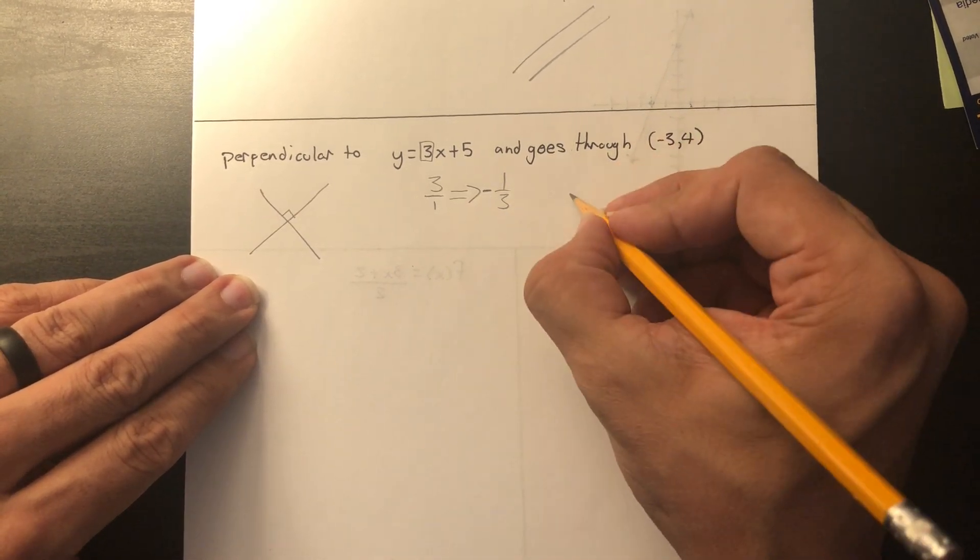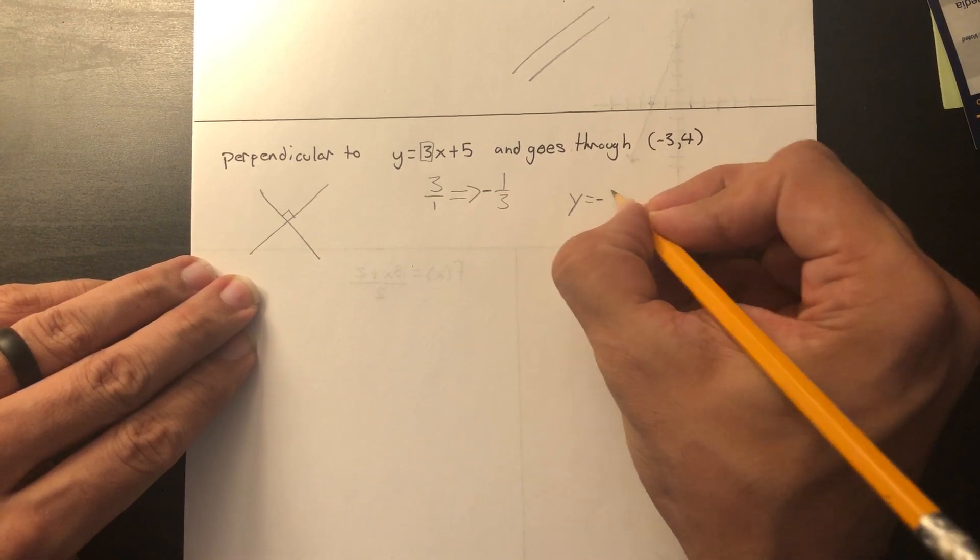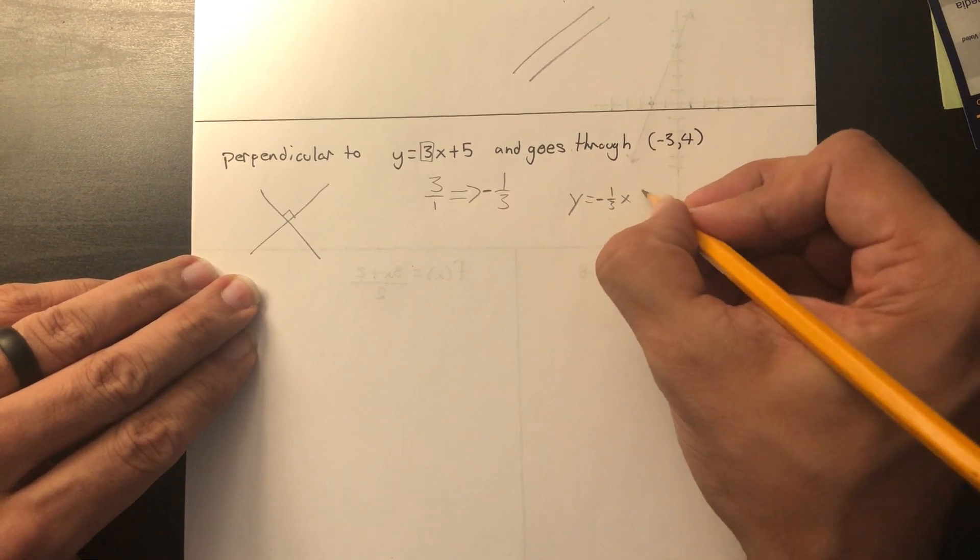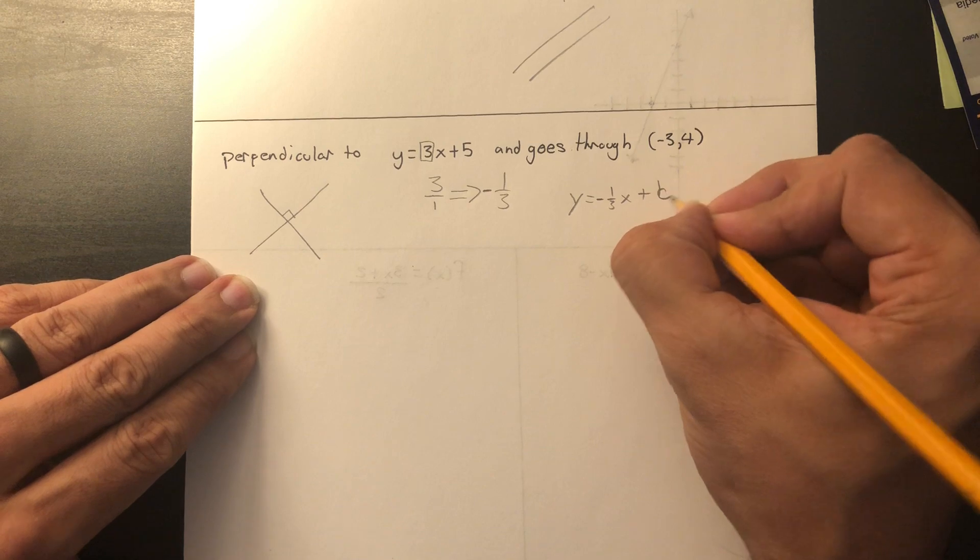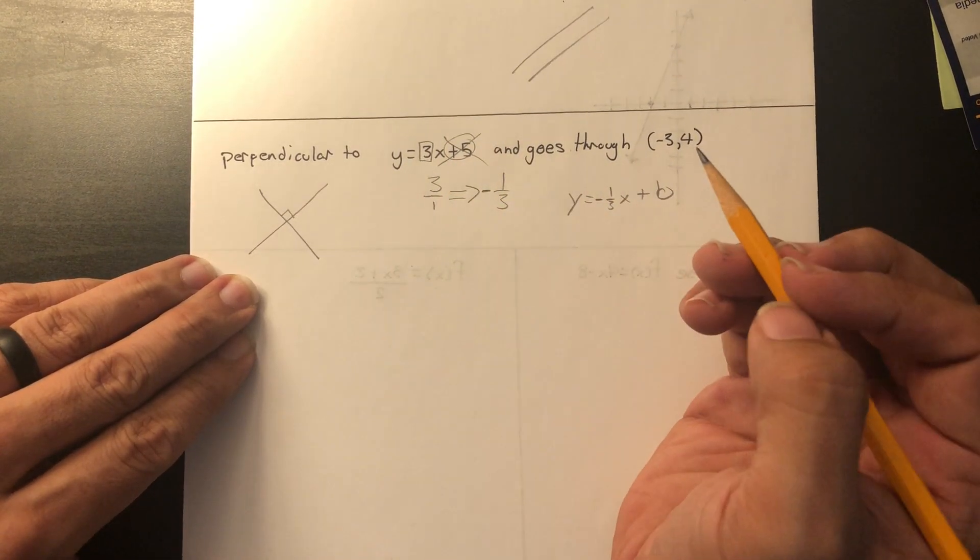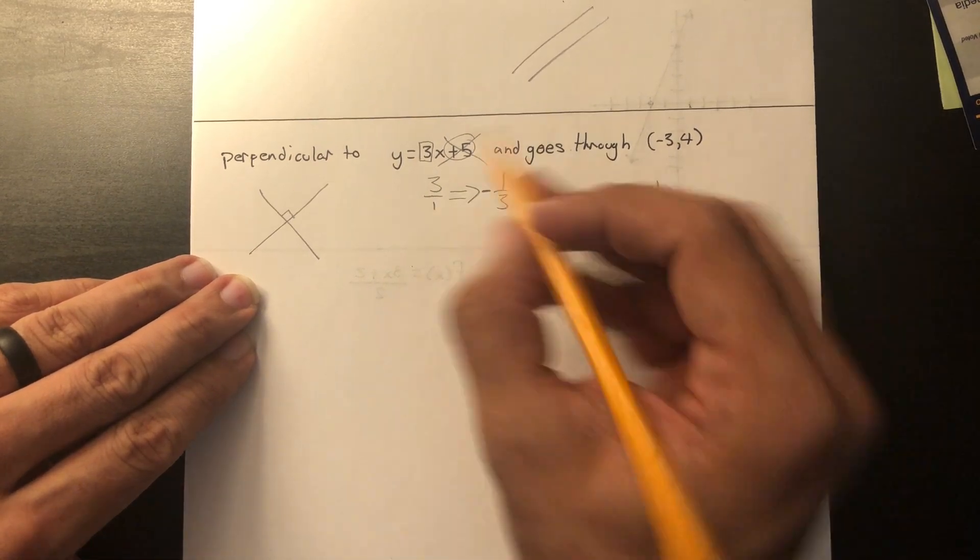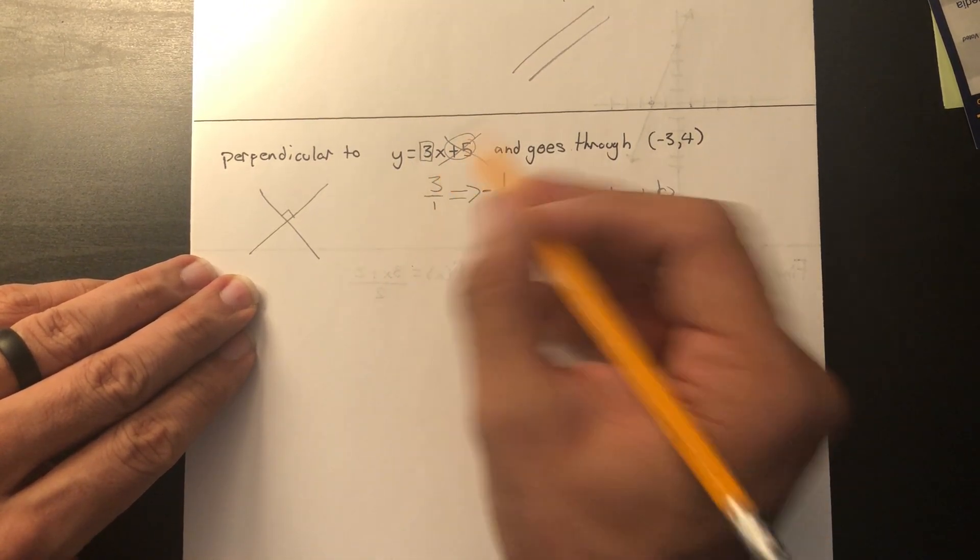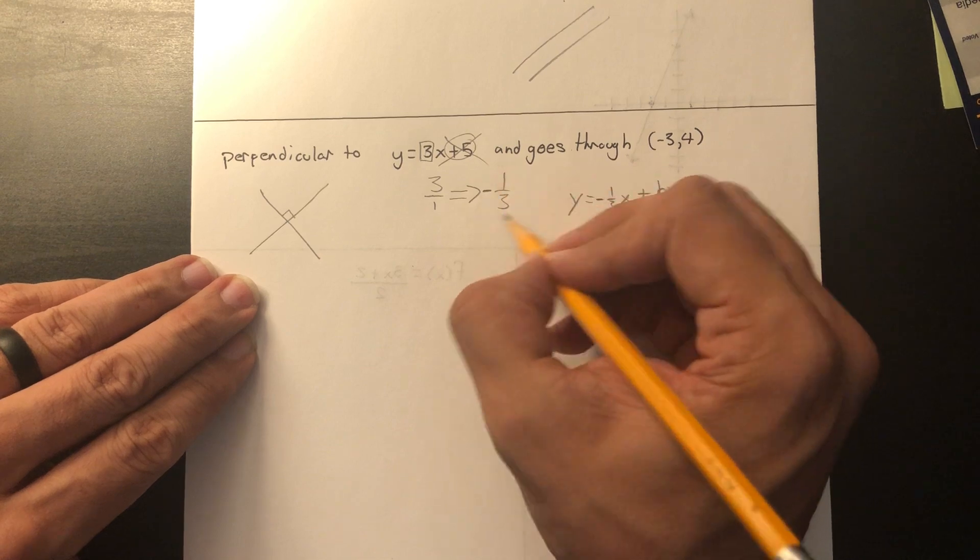Because if your slope is going this way and I have to intersect it at 90 degrees, then mine is going to be negative. That's our slope. So now that I have my slope, I know the equation looks like this: negative 1 third x plus b. What do we do with this 5? Nothing. You're going to do nothing with that 5.